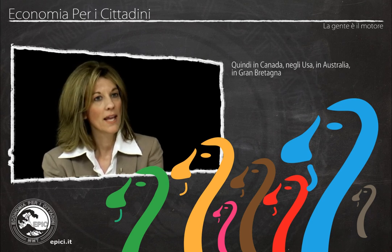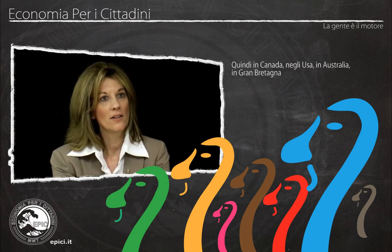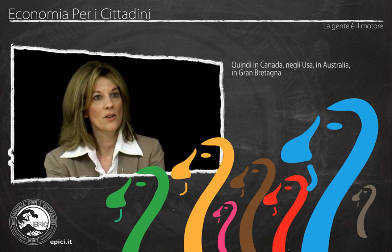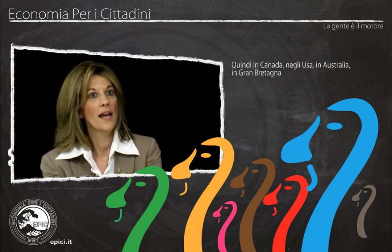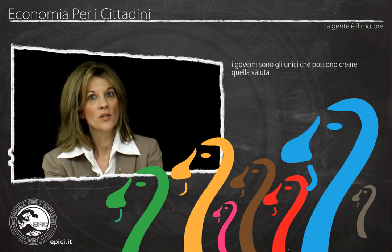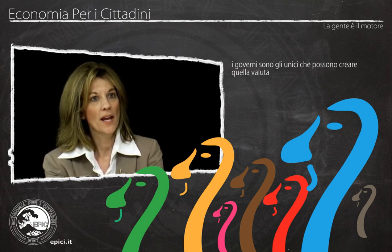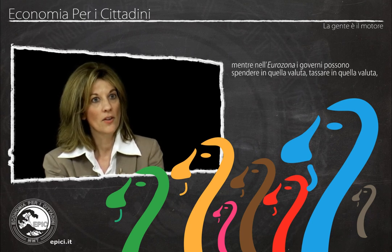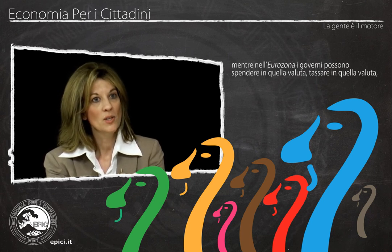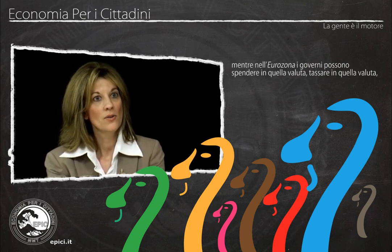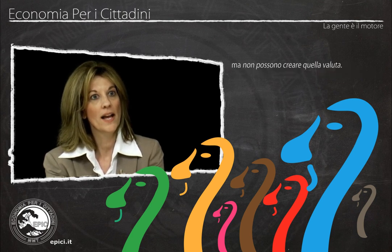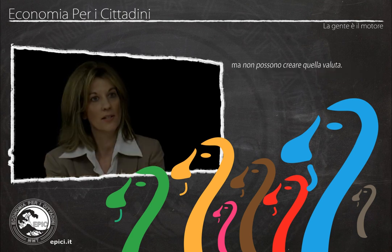So in Canada and in the U.S., in Australia and in Britain, the governments are the only ones who can create their own currency. Here in the Eurozone, governments spend in Euros and tax in Euros, but cannot create the currency.